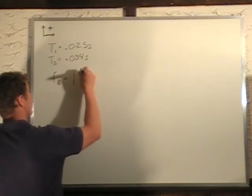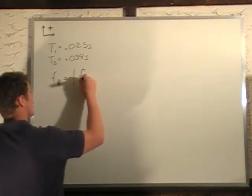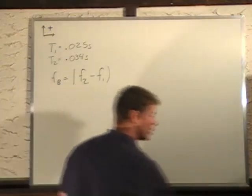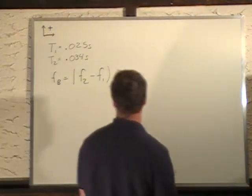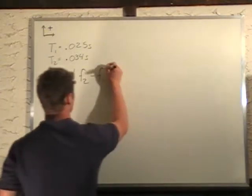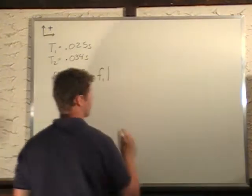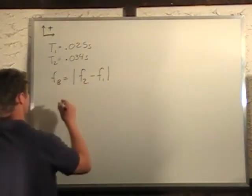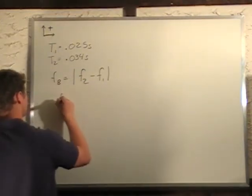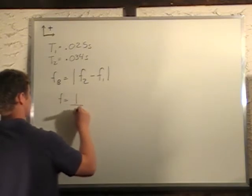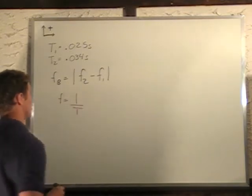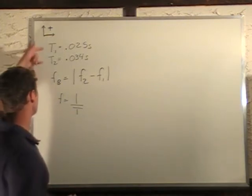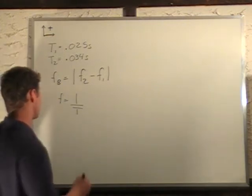The beat frequency is equal to the absolute value of the difference in frequencies — absolute value, not a bracket. Frequency is related to period by the formula f equals 1 over T, the inverse of the period. This holds for both the first and second frequency.